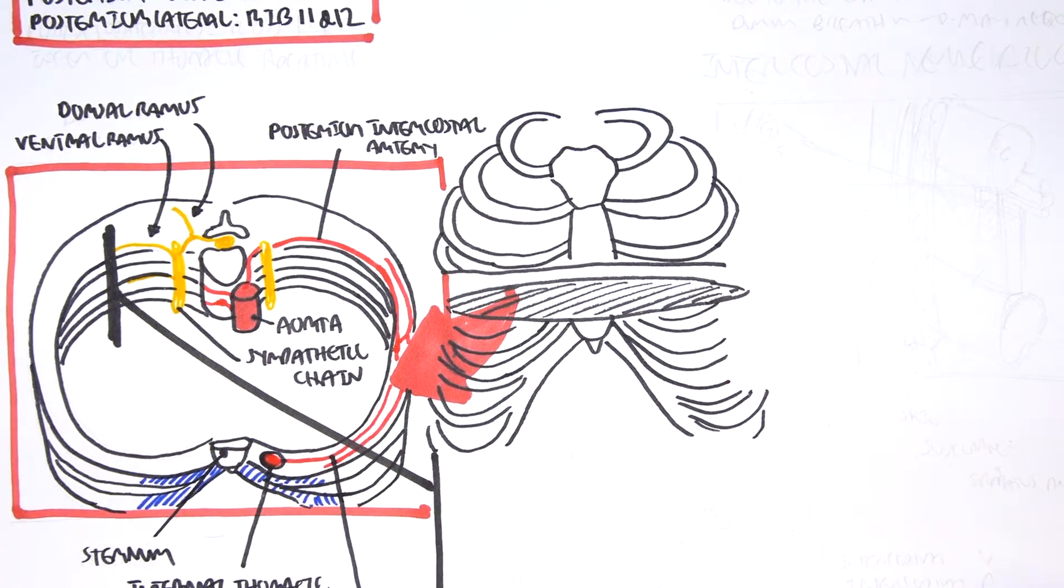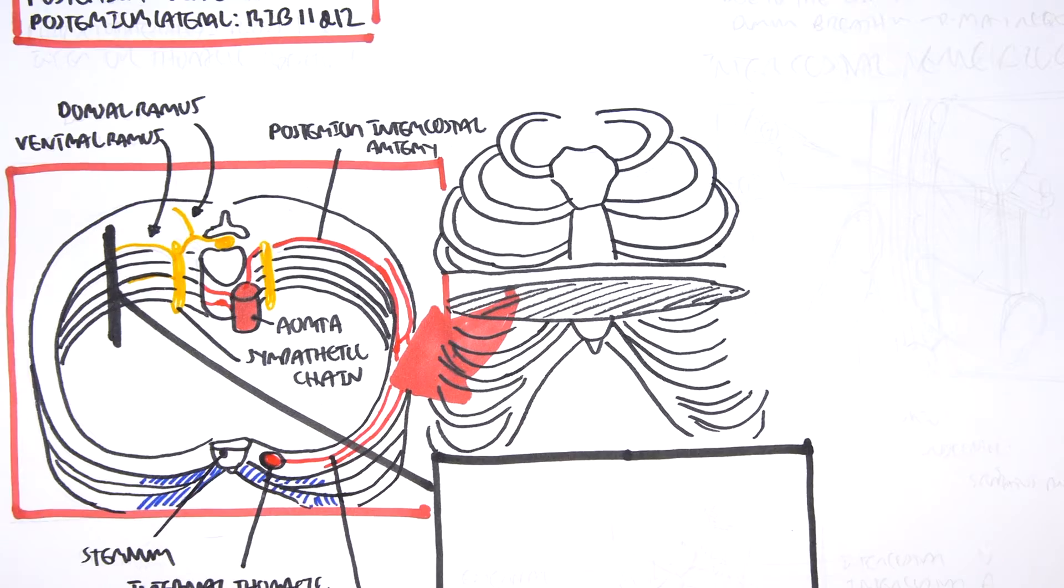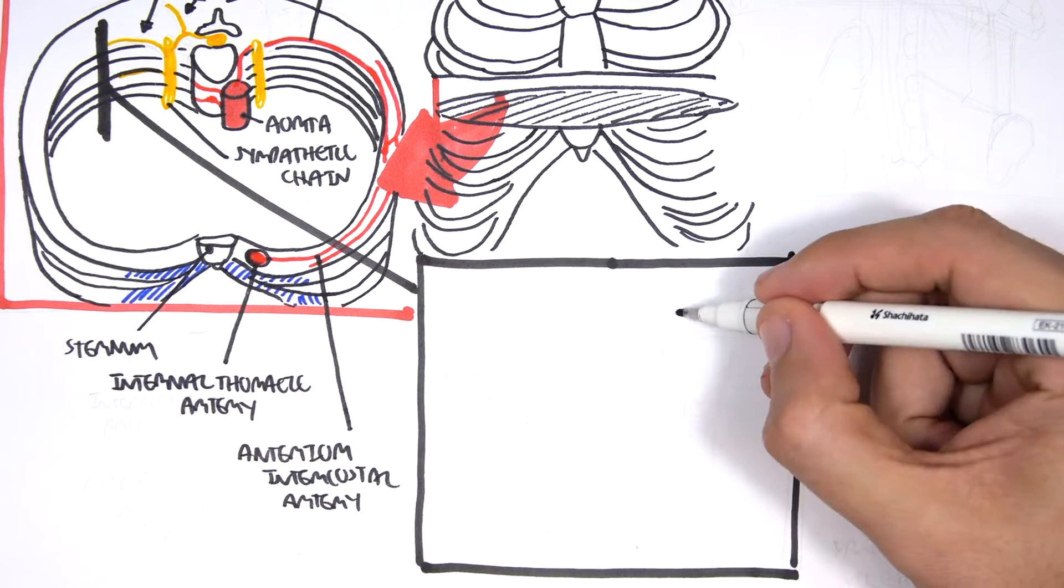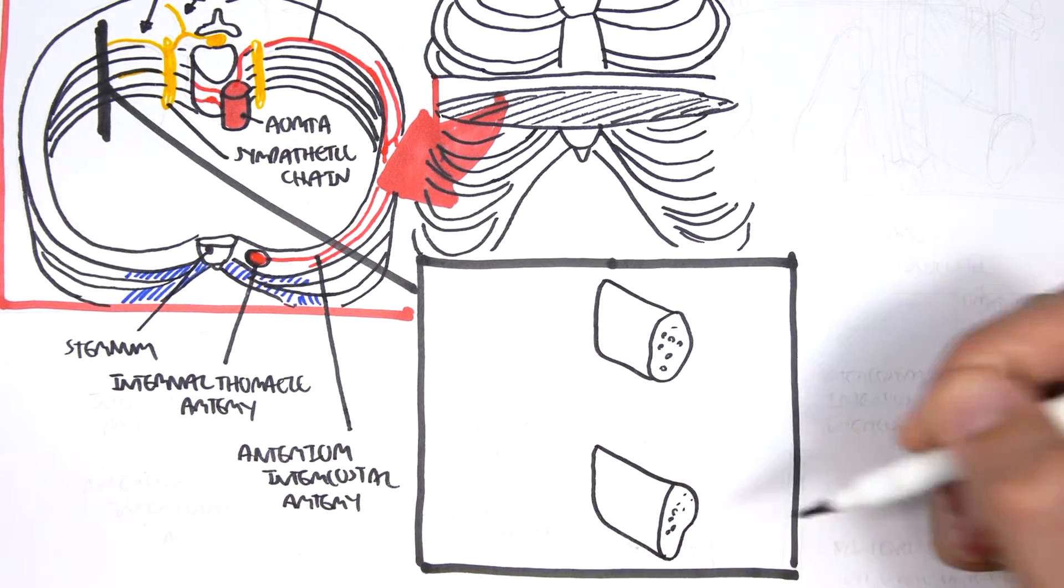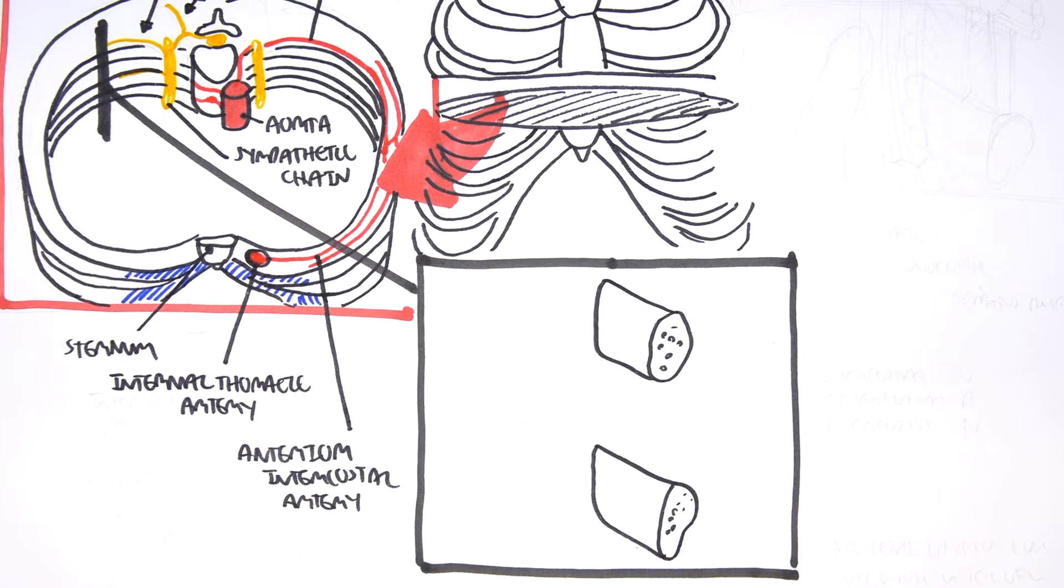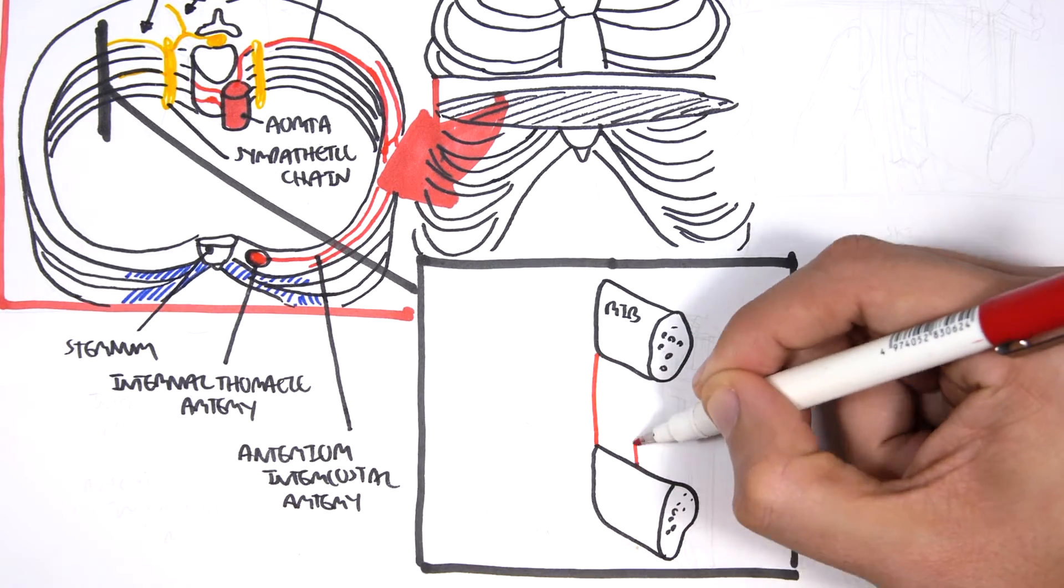Okay, now let's take another cross-section over here. And why we're taking cross-section is because we want to see where these intercostal nerves, arteries, and veins actually pass through in respect to the ribs. So here we have one rib and here we have another second rib below it. Now, actually, there are muscles attaching to the ribs and these muscles are important in respiration.